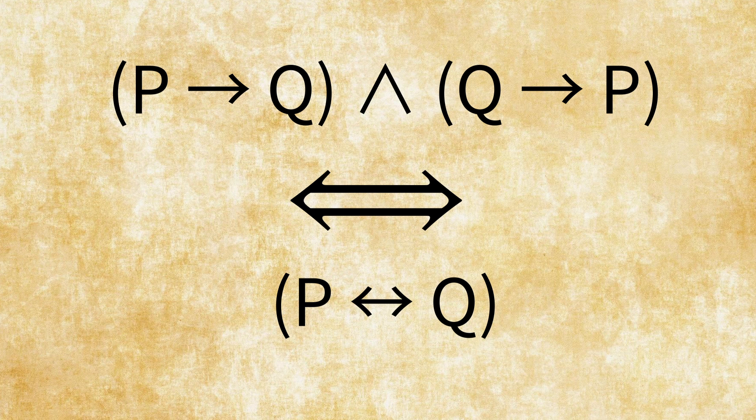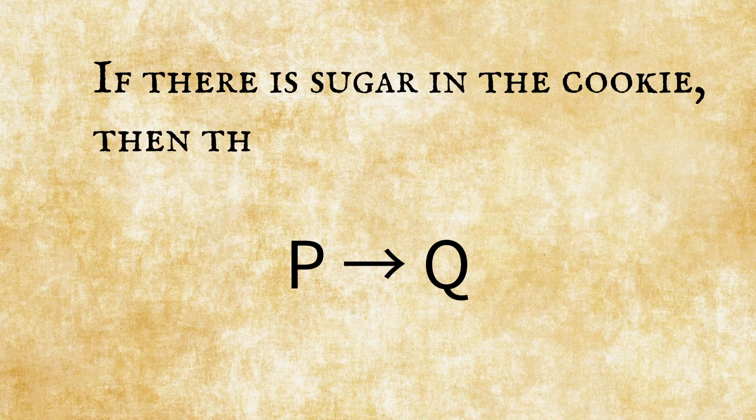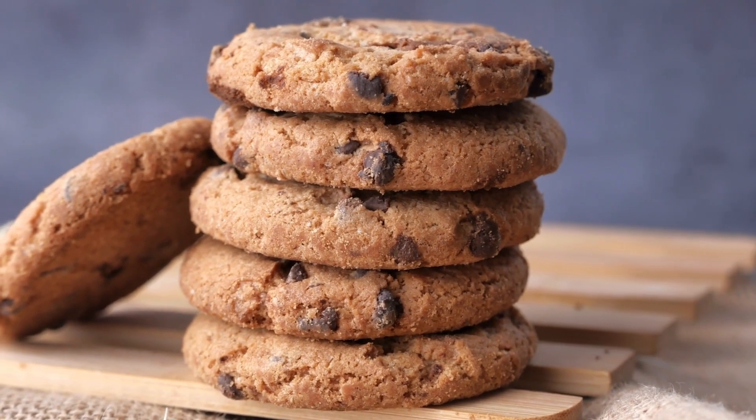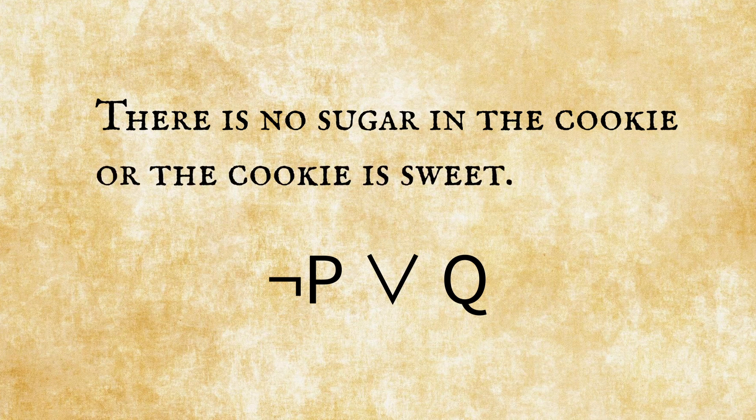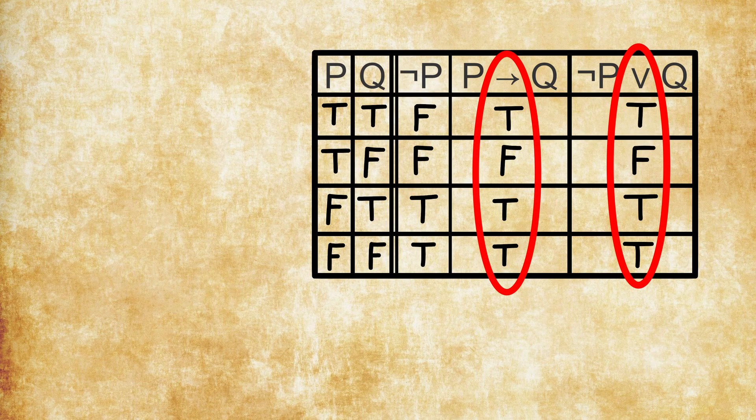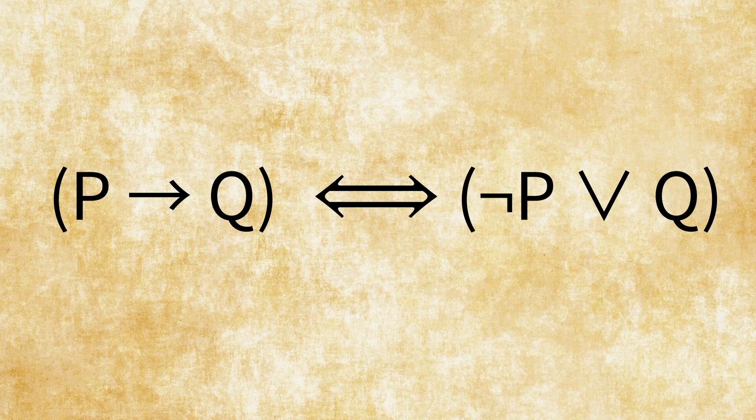In fact, the material conditional is itself also redundant. Take the statement: 'If there is sugar in the cookie, then the cookie is sweet.' This statement is logically equivalent to 'There is no sugar in the cookie, or the cookie is sweet.' If we look at the truth table, they are true and false in exactly the same scenarios. Hence every logical implication can be expressed through a disjunction and a negation. Therefore every biconditional can also be expressed through a disjunction and a negation.